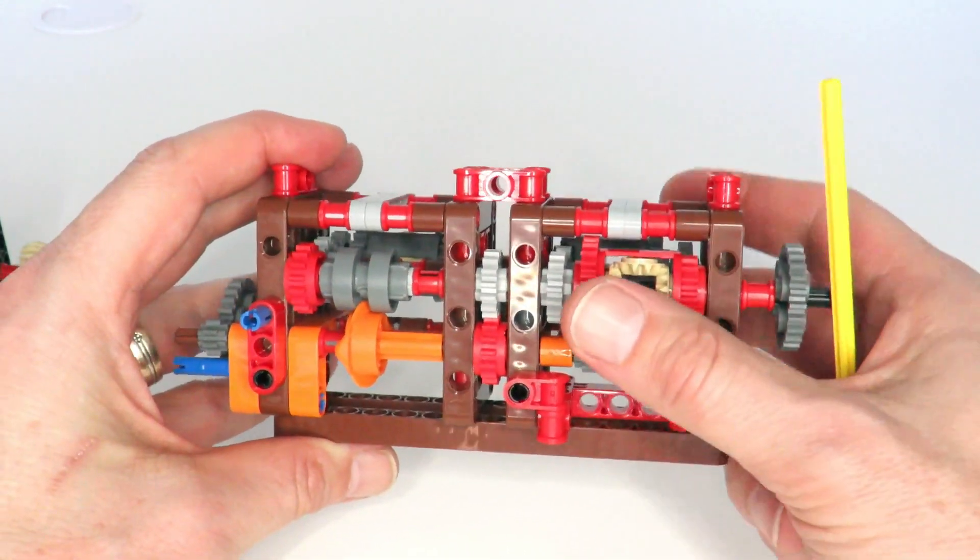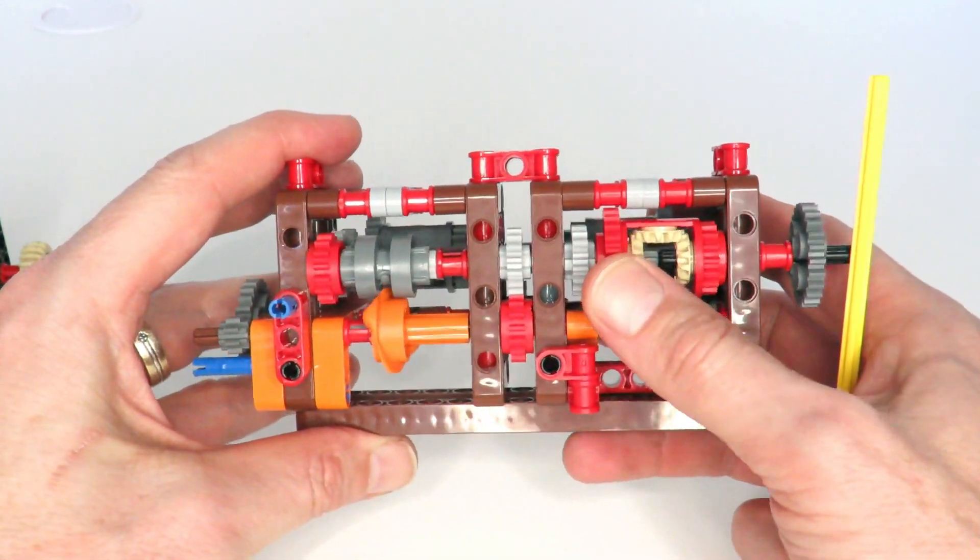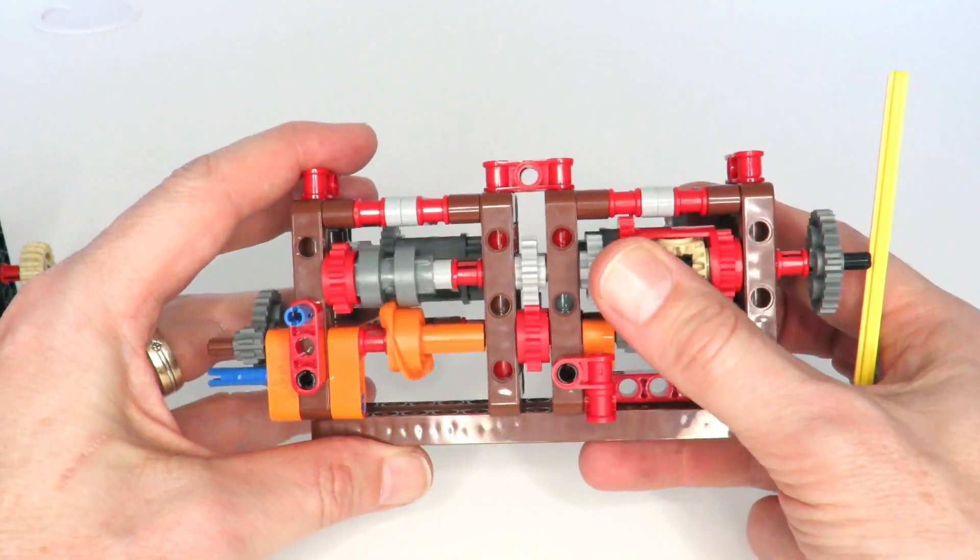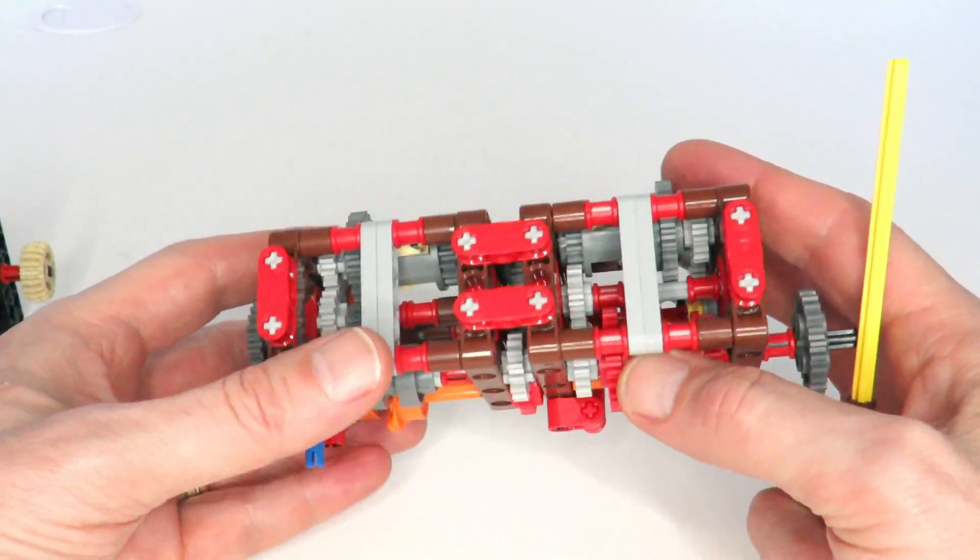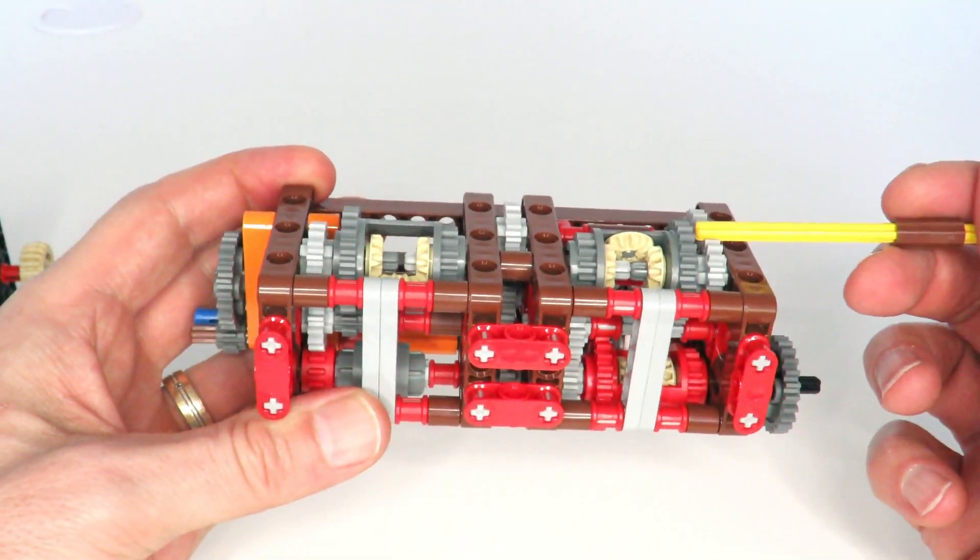And that selector was driven by this differential here, which detects the torque on the output. So when there's some torque on the output, that differential will start to rotate, and that rotation will drive the orange rotary catch selector to select another speed.